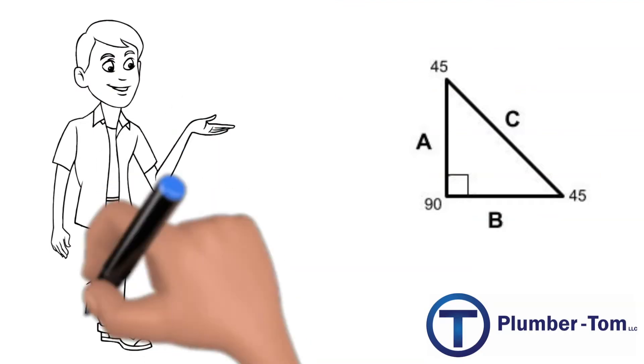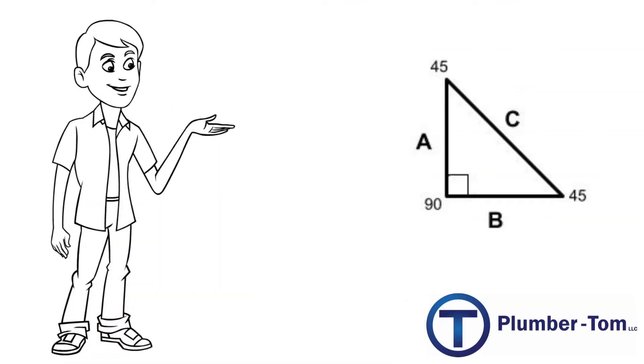Alright, so in plumbing we deal a lot with a right triangle that has 45 degree angles. And you might be wondering, where does this number 1.414 even come from?